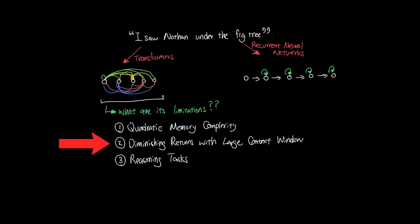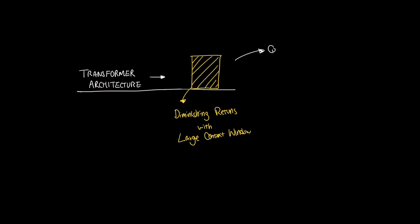Let's jump to the next limitation, which is diminishing returns with large context window. The problem arises when it comes to the size of the input or the context window. Context window is essentially the size of the input that it can see at once. And here's the challenge with the context window.